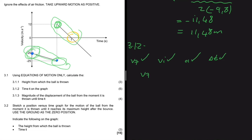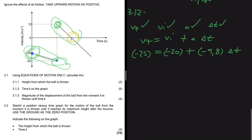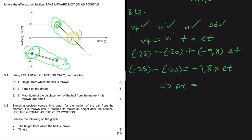For the first part of the motion, using vf = vi + a·Δt: vf is minus 25, vi is minus 20, and a is minus 9.8. So we get: −25 − (−20) = −9.8 × Δt. Dividing both sides by −9.8, we get Δt = 0.5102 seconds.